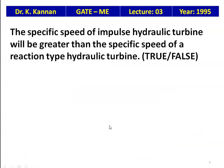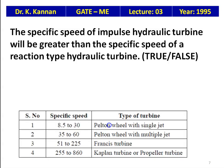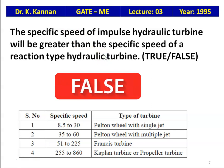True or false: the specific speed of an impulse hydraulic turbine will be greater than the specific speed of a reaction type hydraulic turbine. The specific speed ranges are: Pelton wheel single jet 8.5–30, Pelton wheel multiple jet 35–60, Francis turbine 51–225, Kaplan turbine 225–860. Francis and Kaplan are reaction turbines; Pelton is an impulse turbine. The Pelton wheel has lower specific speed than Francis or Kaplan. The statement is false.